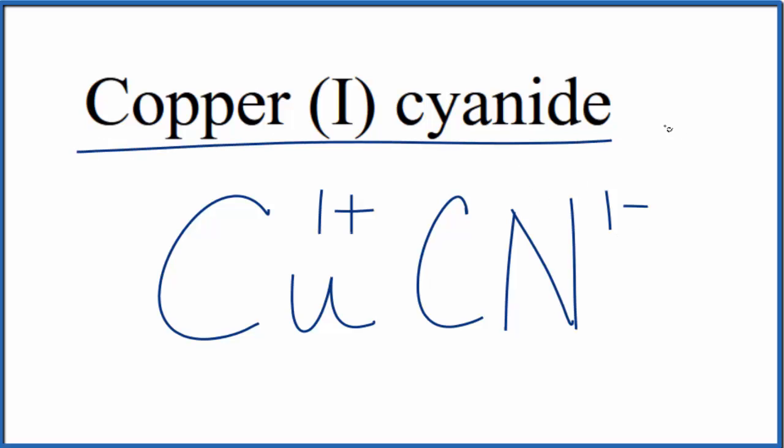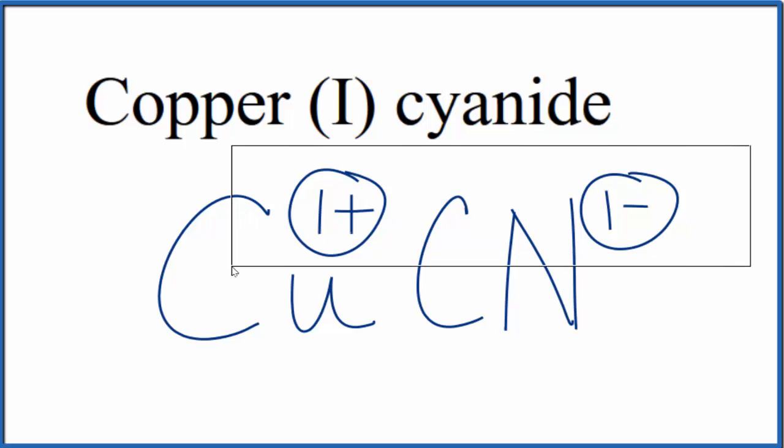Copper one cyanide is neutral, it doesn't say ion after it. So this one plus and the one minus needs to balance. And it does, one plus and one minus adds up to zero, gives us a net charge of zero.